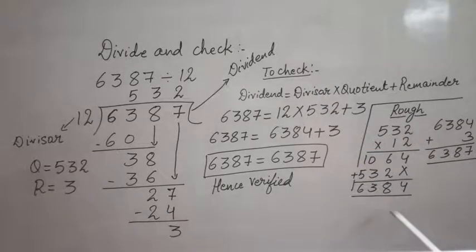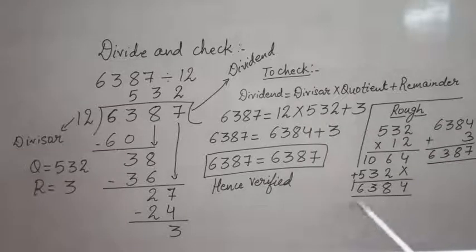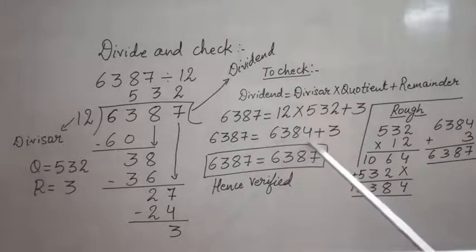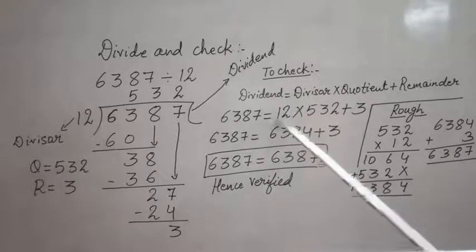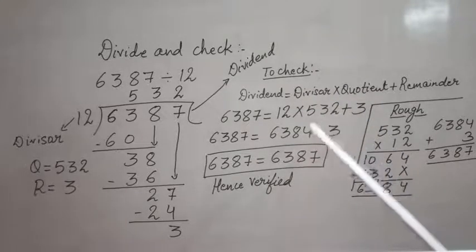First of all I will be multiplying these two numbers. In the rough I have multiplied—you all know how to multiply with a single digit as well as with a two-digit number. So after multiplication I got 6384. Here I have written 6384, which I got after multiplying these two numbers, plus 3 I have copied as it is.